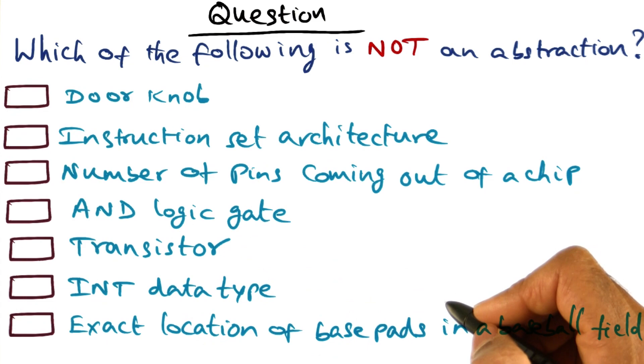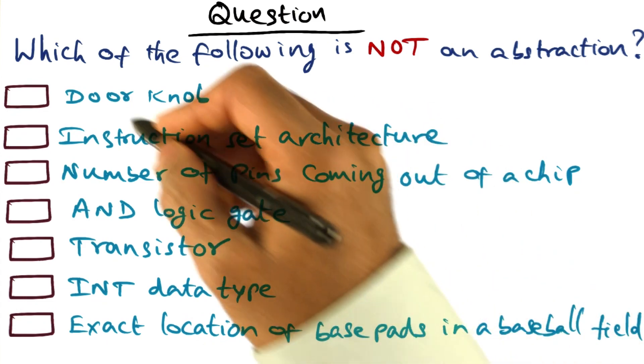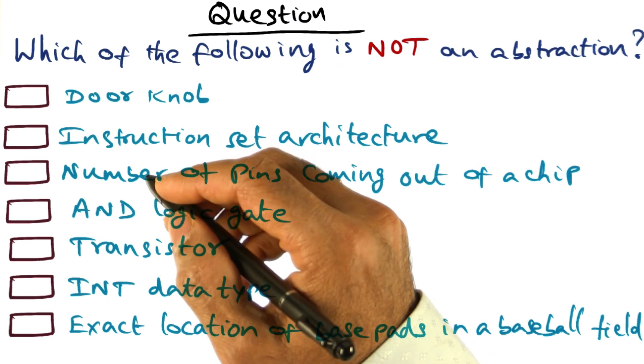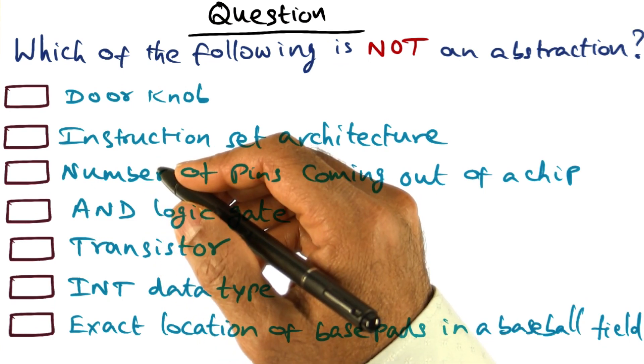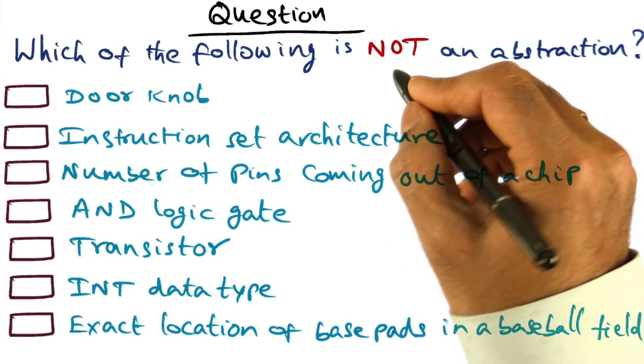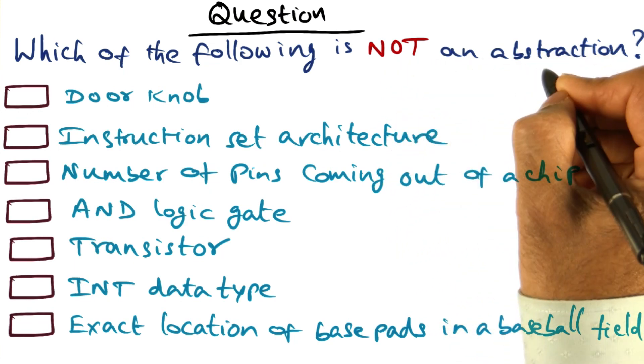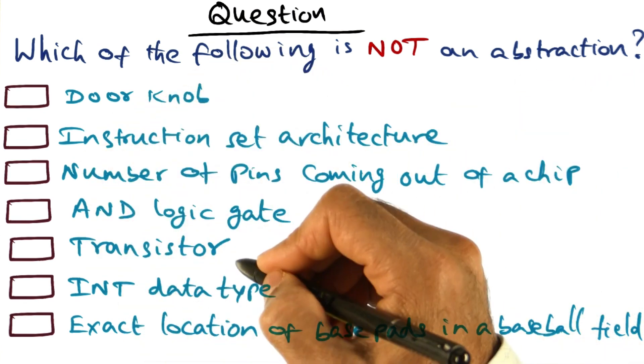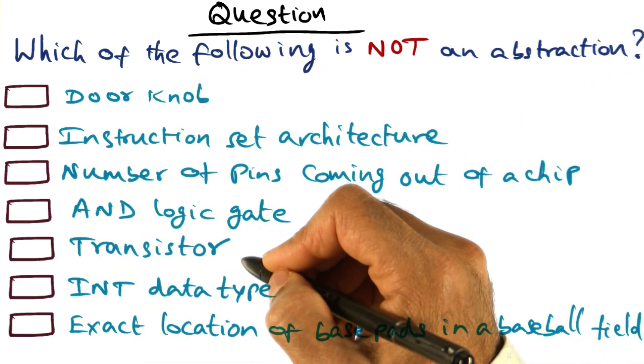So these are the choices I'm giving you, and what I want you to do is think about these different items, which you may have come across for sure in your everyday experience. And tell me which one of these does not qualify as an abstraction. And as I said, there could be more than one that does not qualify as an abstraction.